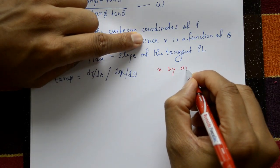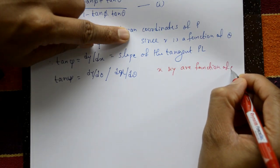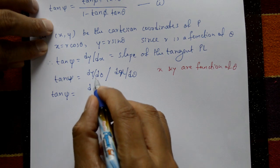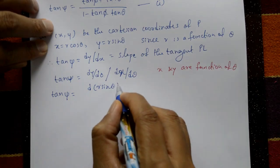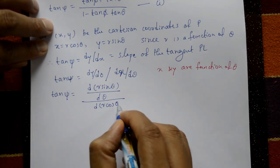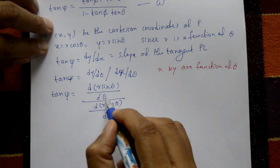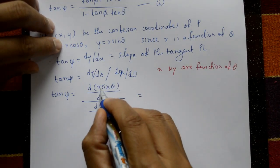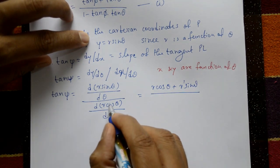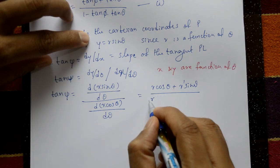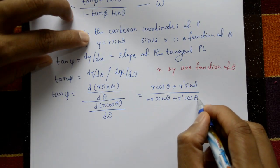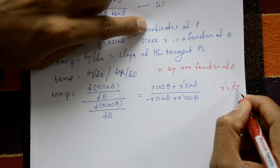Now, tan ψ = (dy/dθ) / (dx/dθ). Since y = r·sinθ, differentiating y with respect to θ using the product rule gives: r·cosθ + r'·sinθ. Since x = r·cosθ, differentiating x with respect to θ gives: −r·sinθ + r'·cosθ. Here r' means dr/dθ.